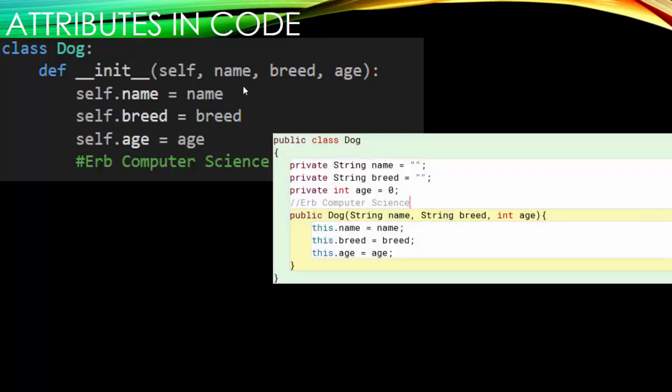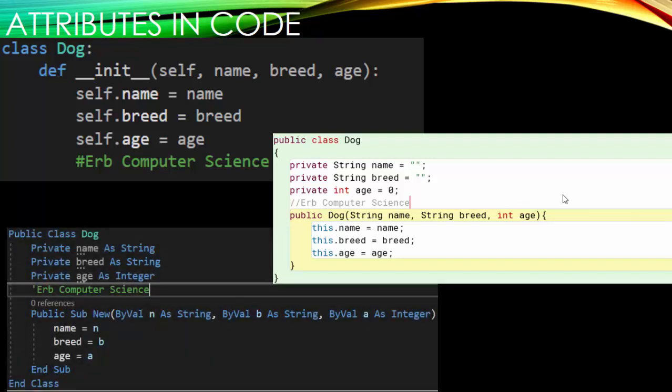Then you have something in Java that would look just like this. You have private. And you would use private because that means it can only be accessed from within the class itself. And you can access them through set and get methods, which we've covered in another video. But here we have the constructor assigning the name, the breed, and the age. And then in VB, this is what it would look like using the keyword private as well.